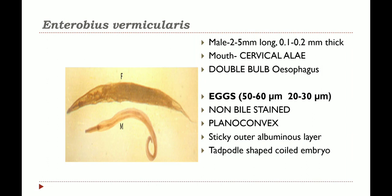Unlike normal helminthic infections which are usually prevalent in developing countries, Enterobius vermicularis is far more common in affluent nations or developed countries, especially in cold and temperate regions. The adult worm is short, white, and fusiform with pointed ends looking like bits of white thread. The mouth is surrounded by three wing-like cuticular expansions called cervical alae which are transversely striated. The esophagus has a double bulb structure, which is a unique feature of the adult worm.